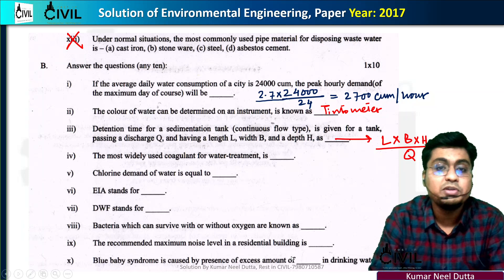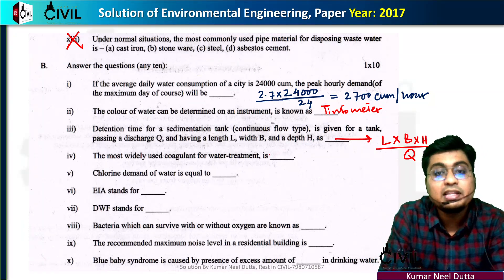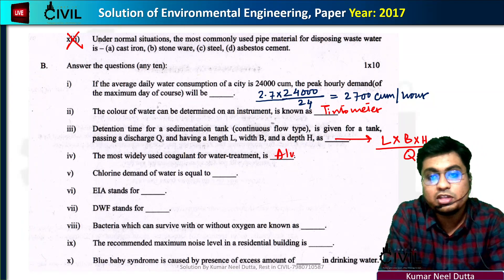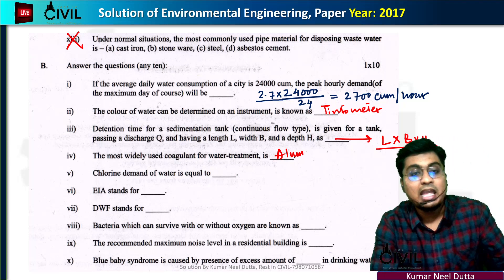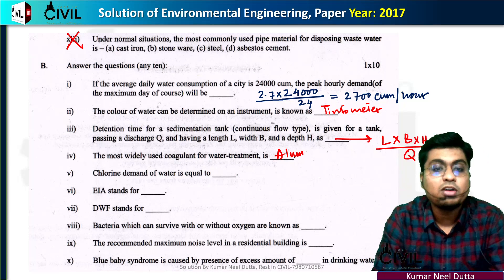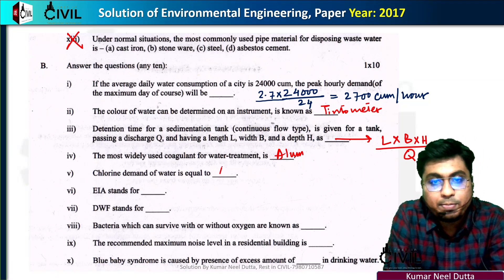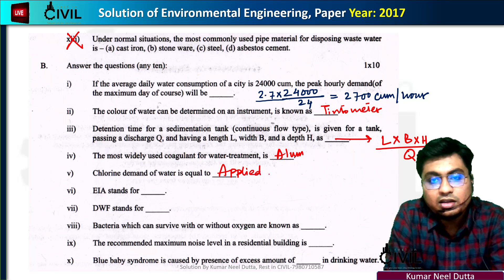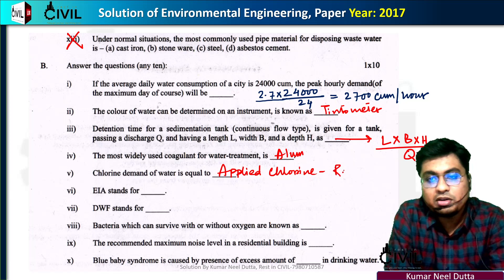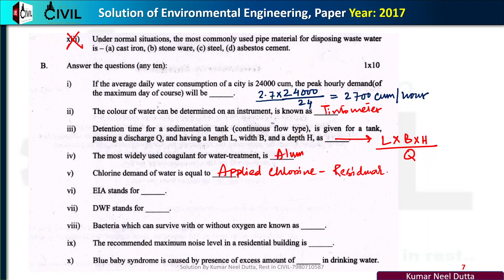The most widely used coagulant for water treatment is alum. The chlorine demand of water is equal to applied chlorine minus residual chlorine.